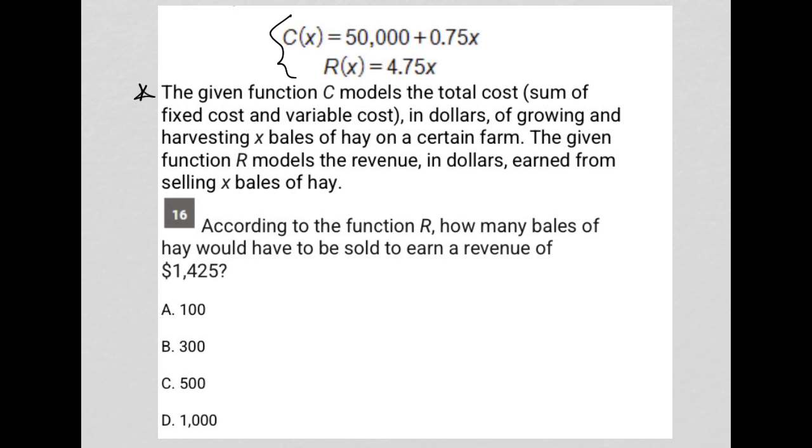The question says the given function C models the total cost, sum of fixed costs and variable costs. Okay, so that means this 50,000 is the fixed and the 0.75x is the variable.